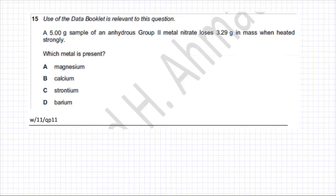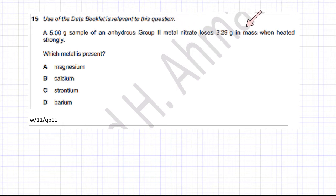This moles question is about moles and ratios. It states that there is a 5 gram sample of an anhydrous group 2 metal nitrate, and it loses 3.29 grams in mass when heated strongly.